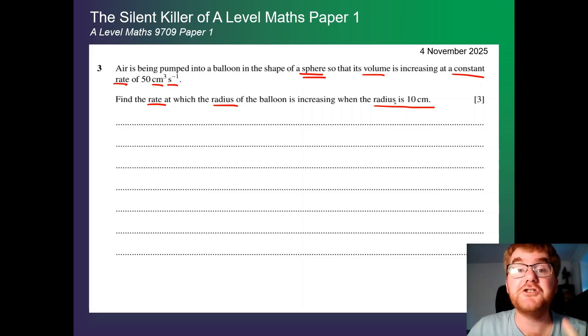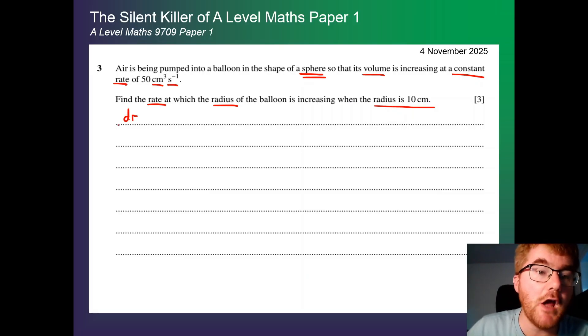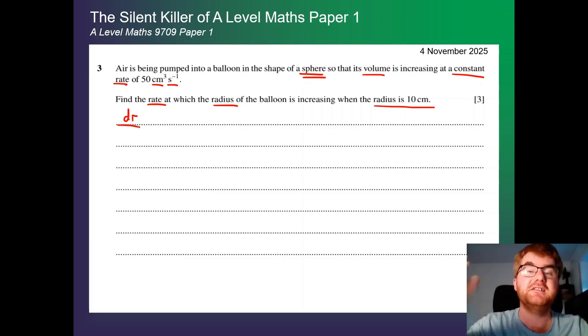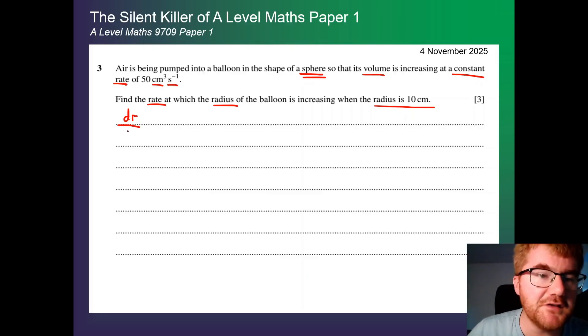So what are we actually looking for? So we want the rate at which the radius is increasing. So we're looking for the change of the radius with respect to time. So as it's increasing, the time goes by. So we're looking for dr by dt. That's how I know what I'm exactly looking for.